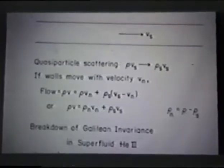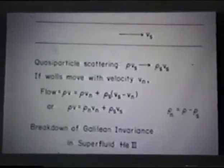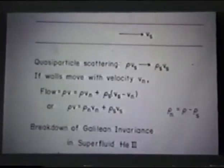In a superfluid, you have to specify the state of macroscopic occupation. If the state of macroscopic occupation corresponds to a flow Vs, then you have to specify that, and then the thermal excitations can come into equilibrium with the walls, and that gives rise to the normal component.